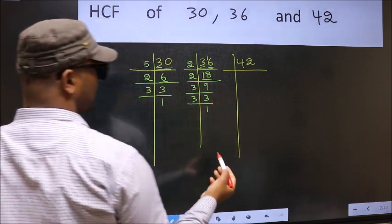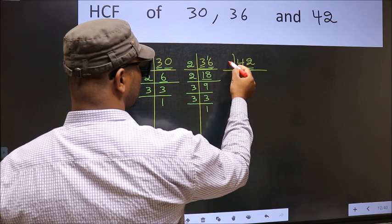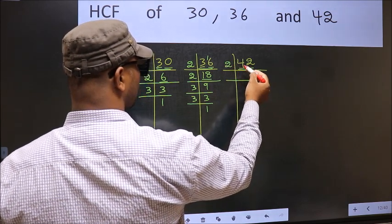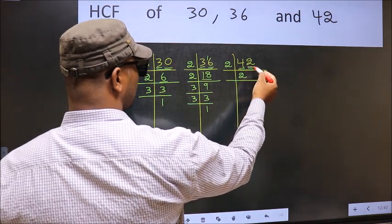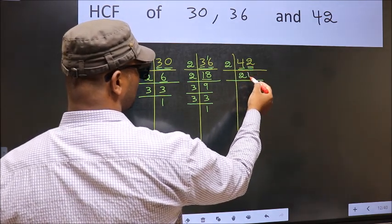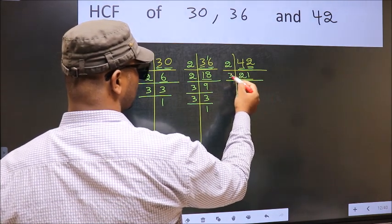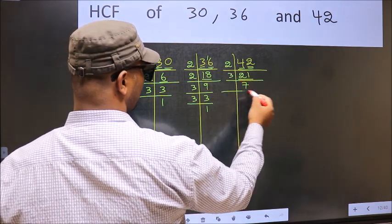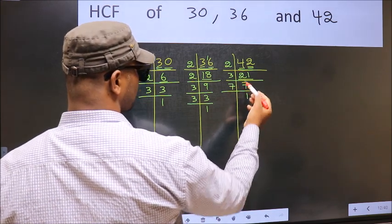Now the other number 42, last digit 2, even, so take 2. First number 4, when do we get 4 in 2 table? 2, 2 is 4. The other number 2, when do we get 2 in 2 table? 2, 1 is 2. Now here we have 21, 21 is 3, 7 is 21. Now 7, 7 is a prime number, so 7, 1 is 7.